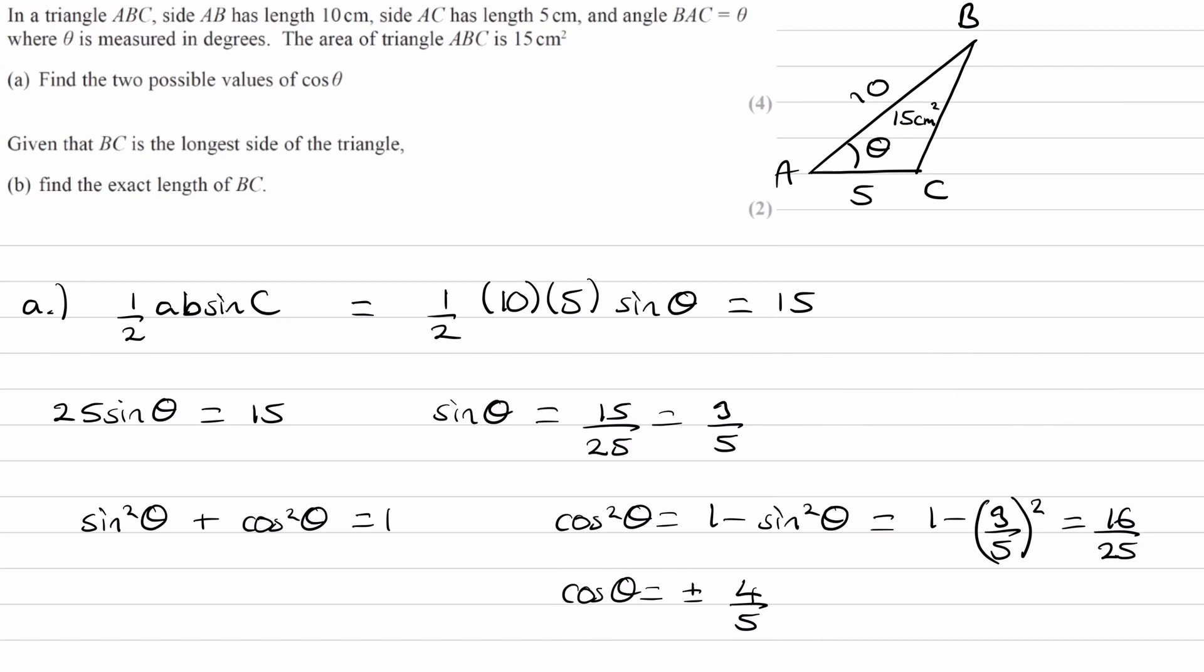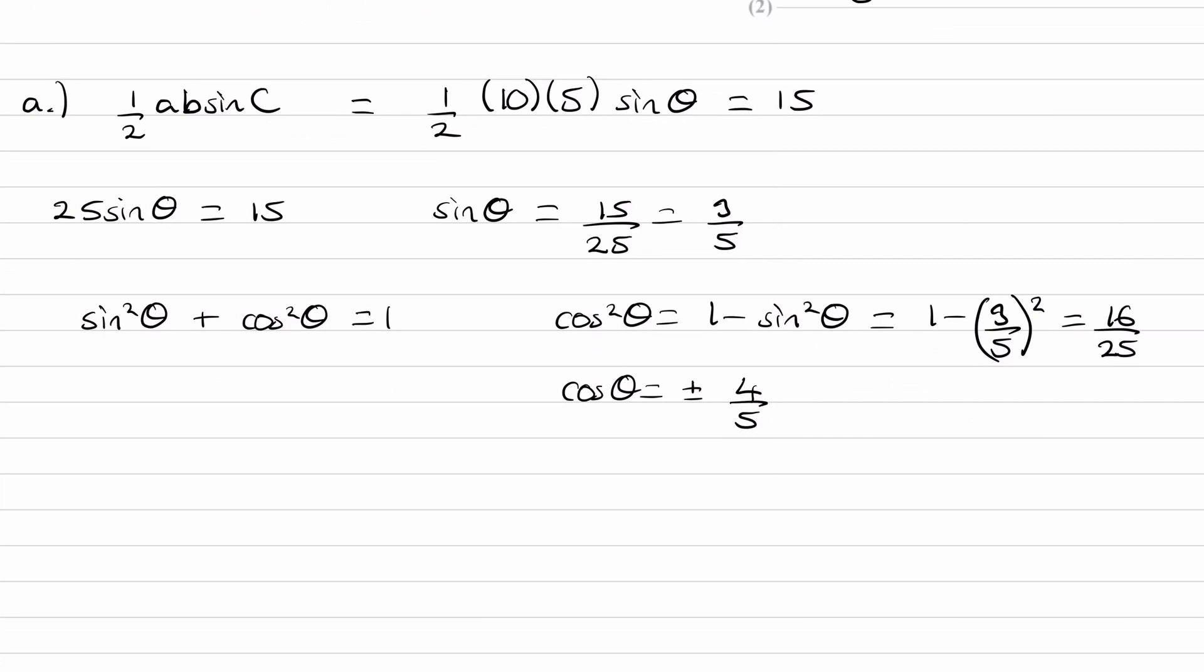Part B. Given that BC is the longest length of the triangle, find the exact length of BC. First of all, these are the two possible values of cos theta that we can have. Let's work out the two possible angles of theta.